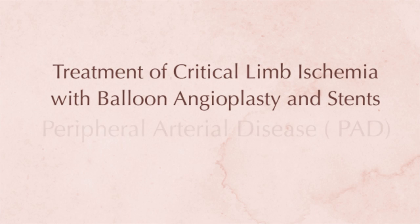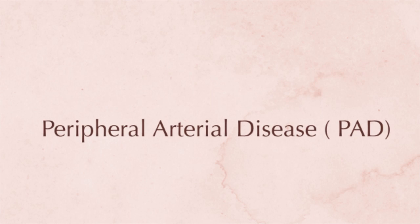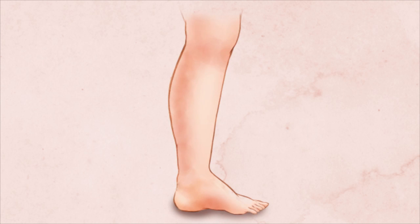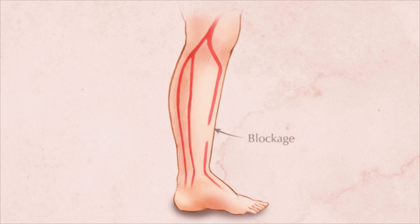Peripheral arterial disease, or PAD, occurs when a blockage forms in the artery blood vessels of the leg or thigh. This blockage often causes pain or fatigue in the leg, thigh, or buttocks during walking or exercise. Critical limb ischemia, a severe form of PAD, may lead to foot ulcers and leg pain, even at rest.